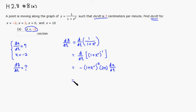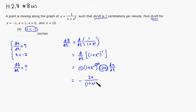Cleaning up: there's a negative sign, so this becomes a fraction. 2x is on top, and since there's a negative power, (1 + x²) goes on the bottom, squared. Then the whole expression is multiplied by dx/dt.